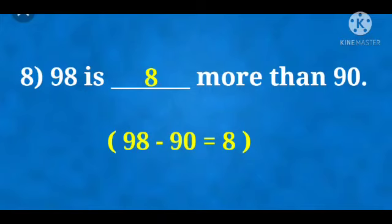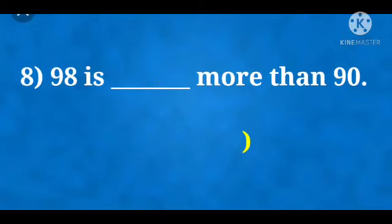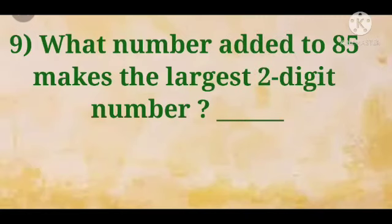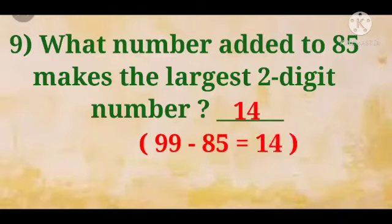Now number 9. What number added to 85 makes the largest 2-digit number? Now children, we know that largest 2-digit number is 99. So 99 minus 85 we will get the digit, that is 14. So if we add 14 to 85 we will get the largest 2-digit number.